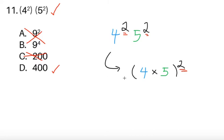Now just to prove ourselves correct, let's just see. 4 times 5 is 20. So 20 squared, that's indeed 400.